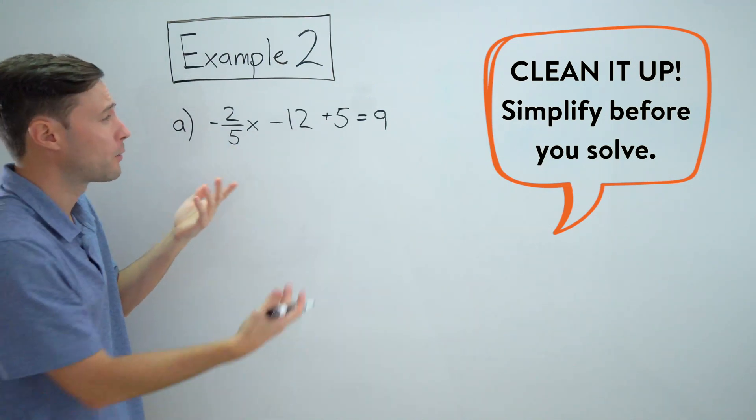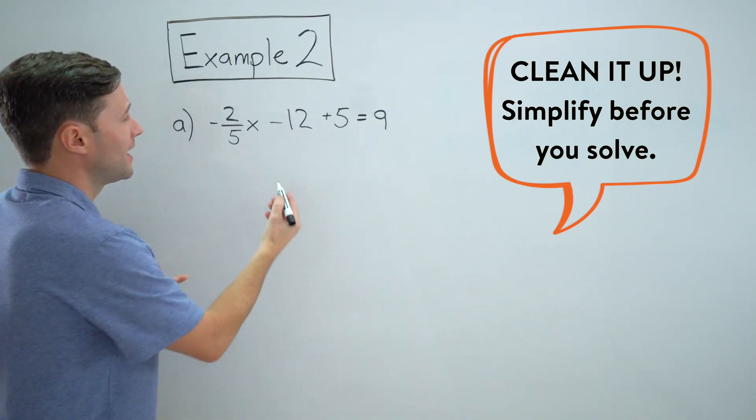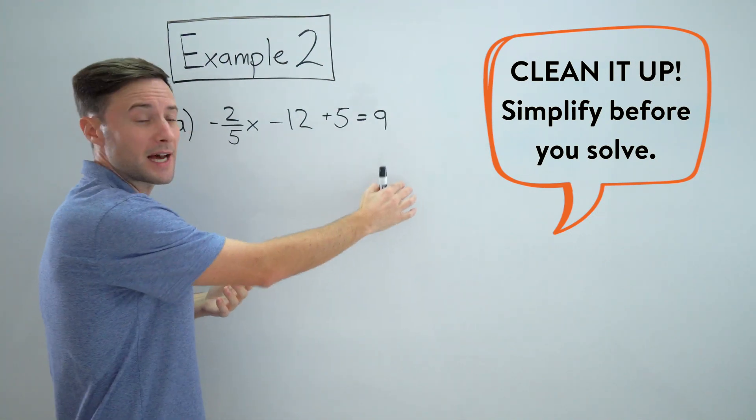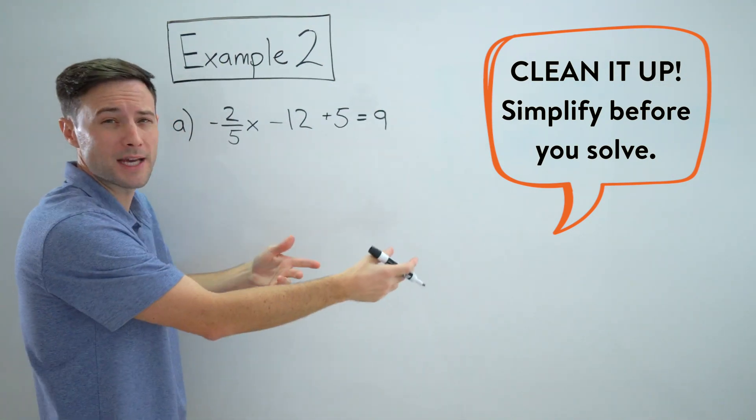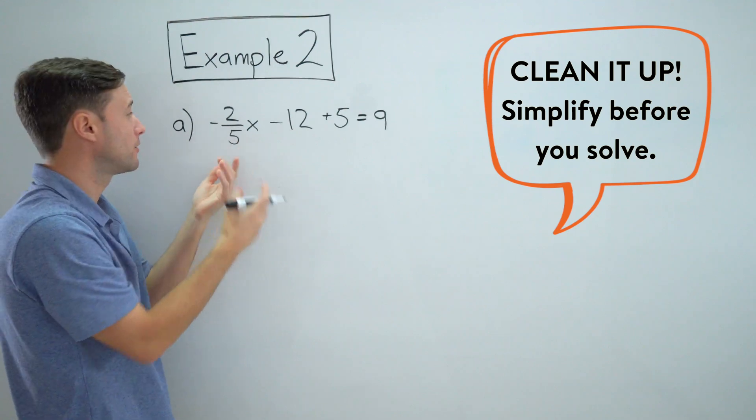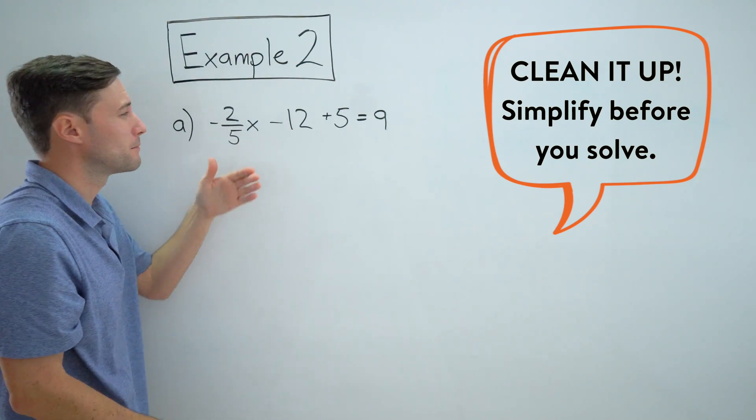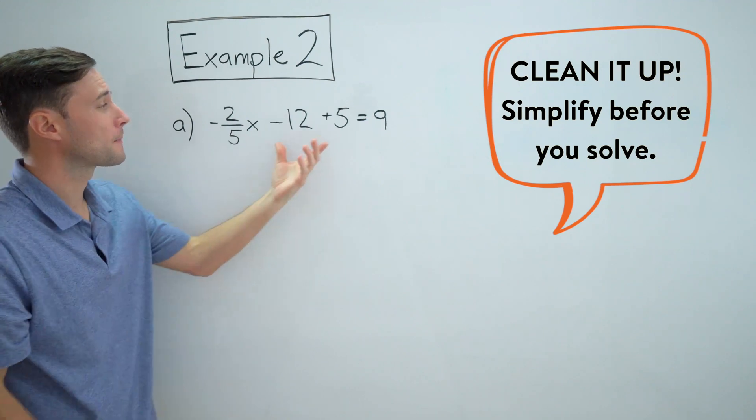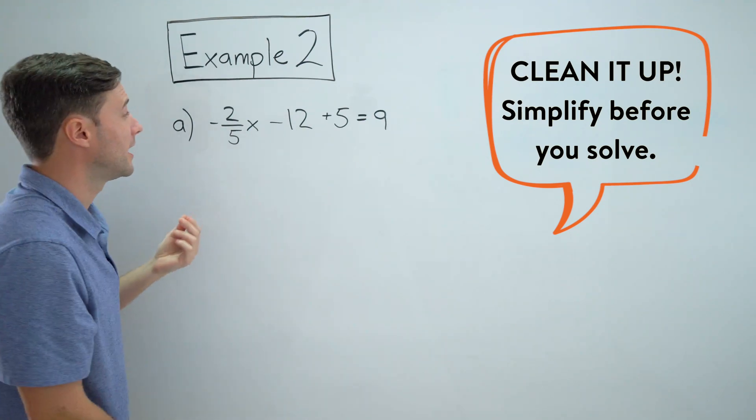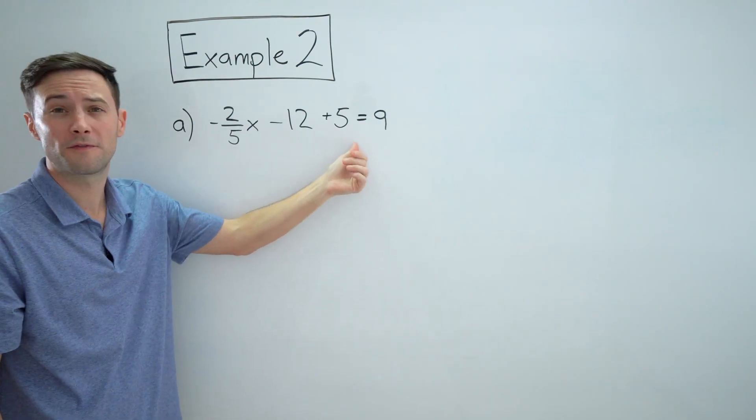Because here, if I wanted to do it in multiple steps, I would add 12 to both sides, subtract 5 from both sides, and then I'd tackle this negative two-fifths x. But those are extra steps. If instead, we simplify it first and say, well, minus 12 plus 5,